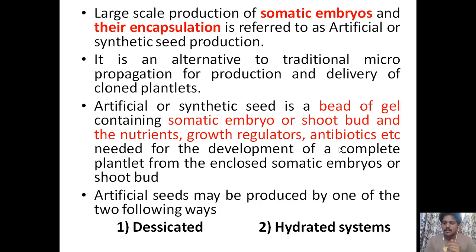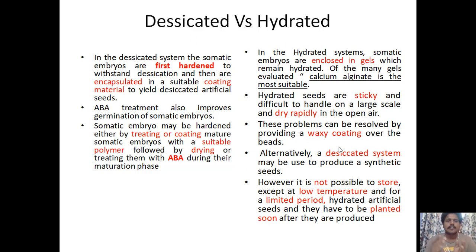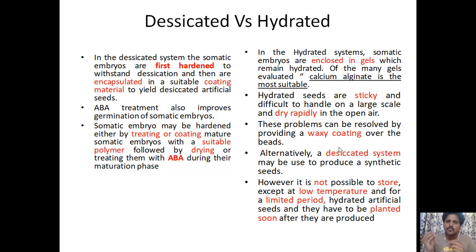In desiccated systems, shown on the left hand side, the somatic embryos are first hardened to withstand desiccation and then encapsulated in a suitable coating material in gel to yield desiccated artificial seeds. ABA treatment also improves germination of somatic embryos. Somatic embryos may be hardened by treating mature somatic embryos with a suitable polymer followed by drying, or by treating with ABA during their maturation phase.